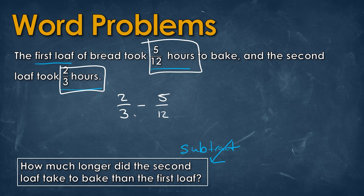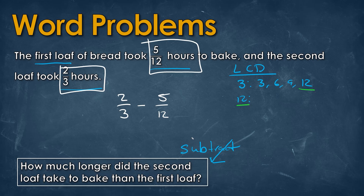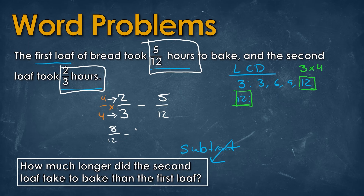We don't have the same denominator, so we need to find a common one. This is a special case: we have 3 and 12, and since 3, 6, 9, 12 — we already have 12 in the multiples of 3. So 3 multiplied by 4 gives us 12. We only need to multiply the first fraction by 4 on top and bottom; we don't need to touch the fraction with denominator 12. Multiplying straight across gives us 8 over 12 minus 5 over 12.